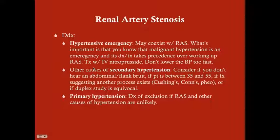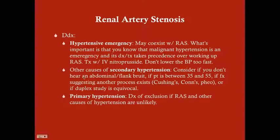Hypertensive emergencies are an emergency — diagnosis and treatment take precedence over RAS. Treat these patients with IV nitroprusside, which is the treatment of choice and will usually come up on the USMLE; calcium channel blockers can also be used. Importantly, do not lower the blood pressure too fast — avoid lowering the mean arterial blood pressure more than 25 percent within the first 24 to 48 hours.